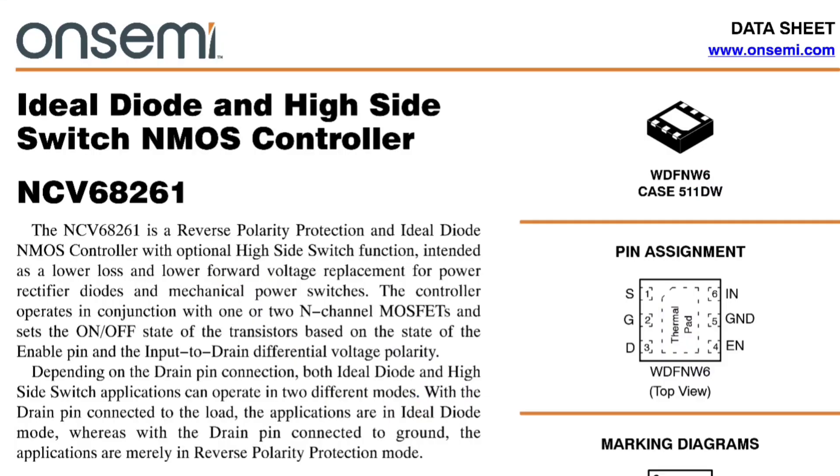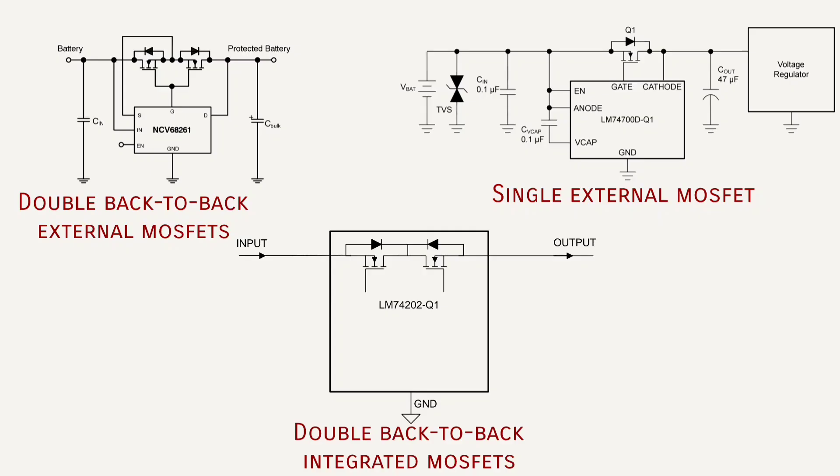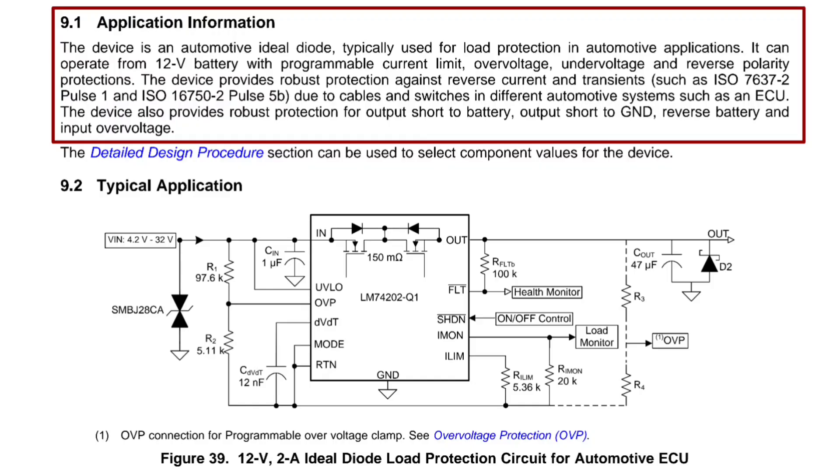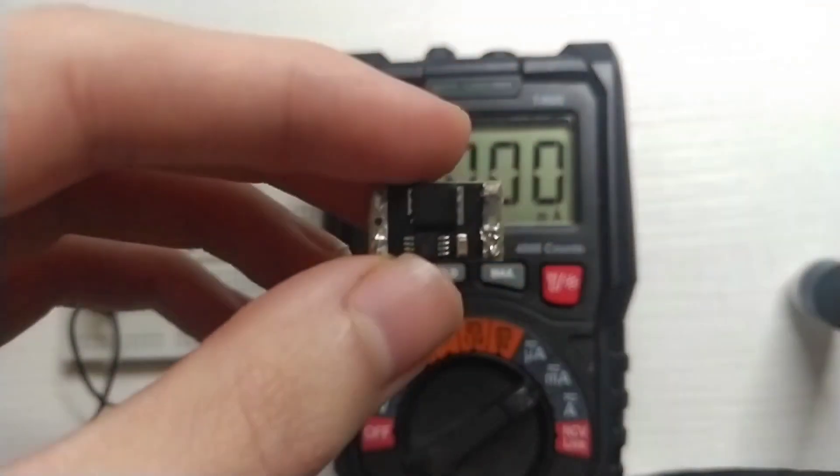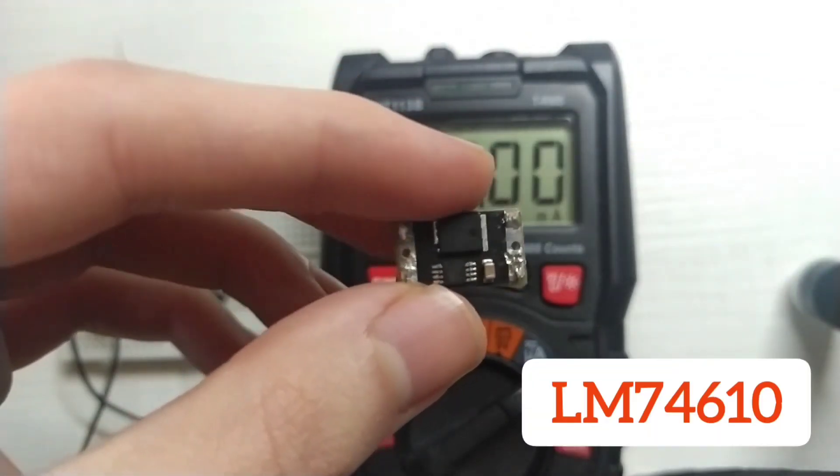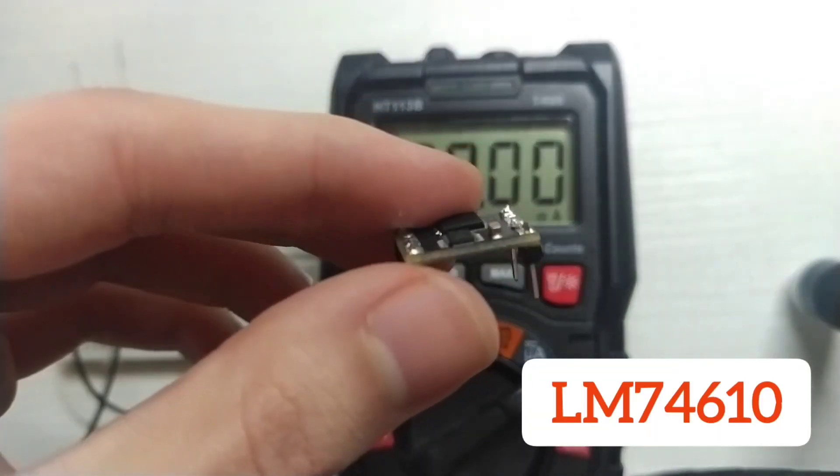As last, we have dedicated ICs. There are really tons of them. And they can have a simple circuit or fairly complex one. They usually offer other protection features like overvoltage protection, overcurrent protection and so on. I will try an ideal diode module that incorporates an LM74610, which is one of those dedicated ICs.